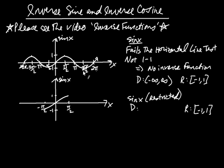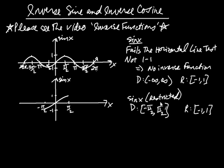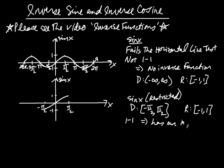There are infinitely many ways to restrict the domain, but we take just the portion of sine from negative pi over two to positive pi over two. So sine restricted has a domain of negative pi over two to pi over two. This part of the curve passes the horizontal line test — the range is negative one to one and the function is one-to-one, which means sine restricted has an inverse.